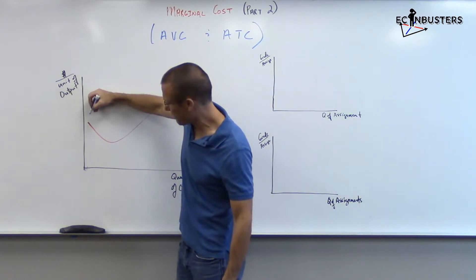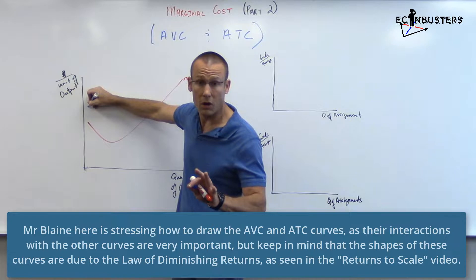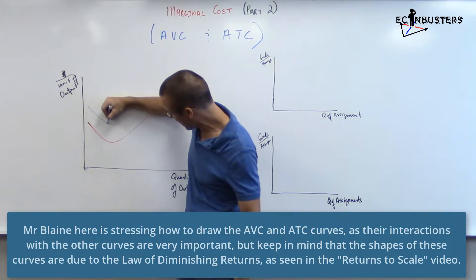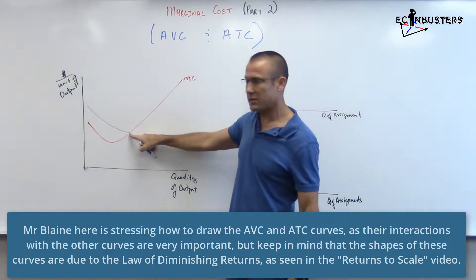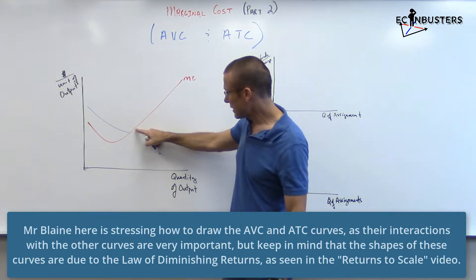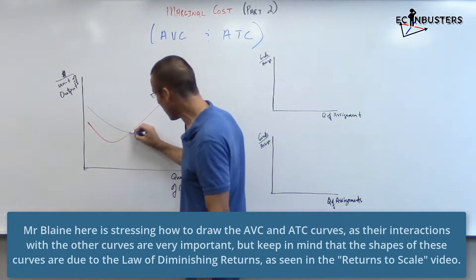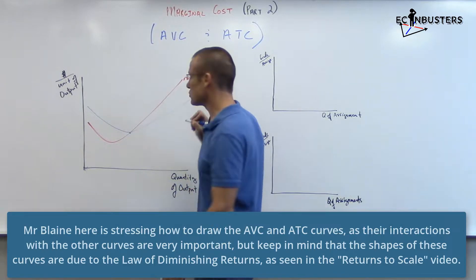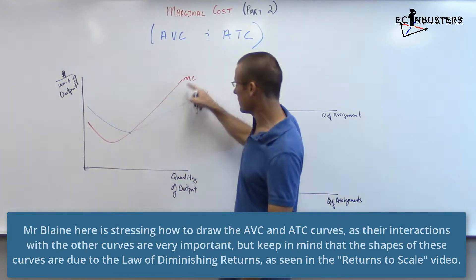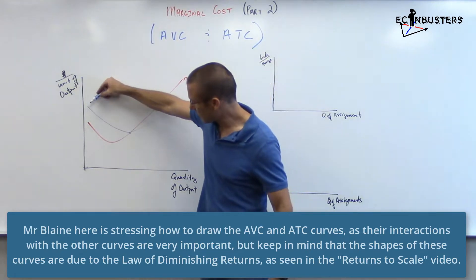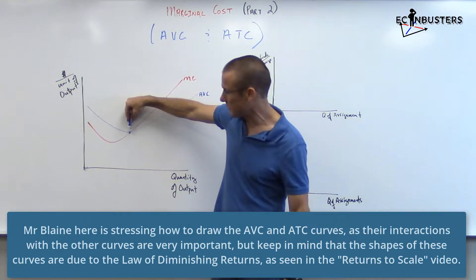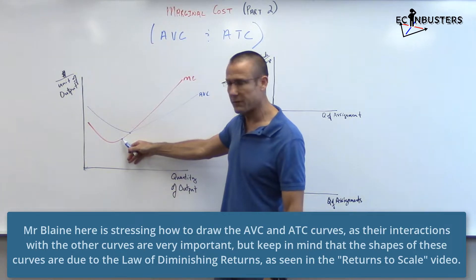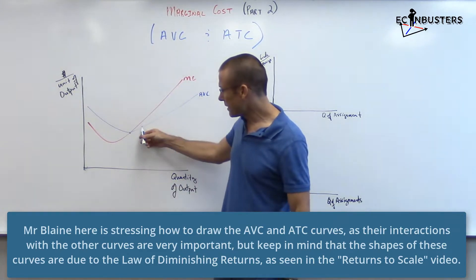I'm going to start my average variable cost above my MC. If the MC is below my average, it's pulling my average down, so my average goes down, down, down until it hits the MC curve. At that point the MC is going to be above my average, so the average variable cost has to go back up. That's the logic: MC below AVC pulls it down, MC above AVC pulls it back up.